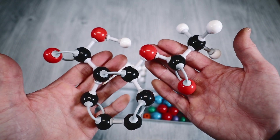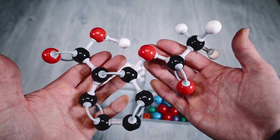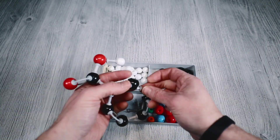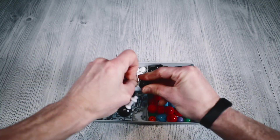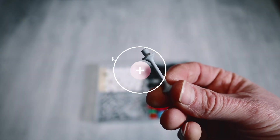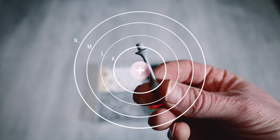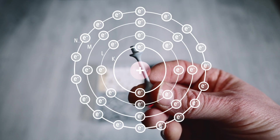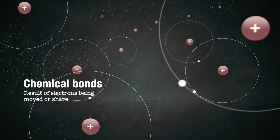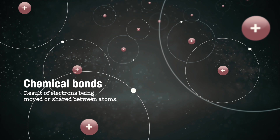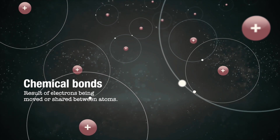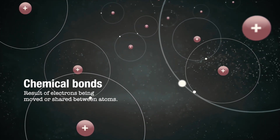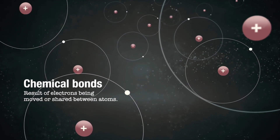In a molecular model, the chemical bonds usually look like this. But in reality it is quite different. Chemical bonds are in fact the result of electrons being moved and shared between atoms. There are a few different ways chemical bonds can form.